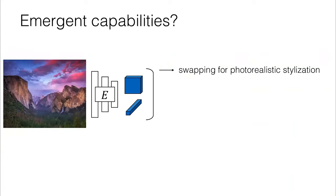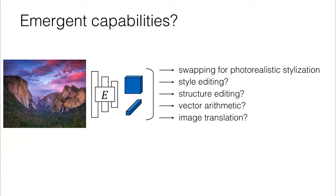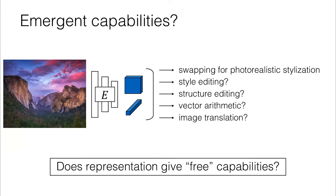This is great. At least we're able to do the single task of swapping or photorealistic stylization. But this was not our goal to begin with. This was just a pretext task. What we want to see is if we get anything out for free. Do we get emergent capabilities, such as editing the style of the image, messing with the structure, or doing vector arithmetic? Does this representation end up showing us these free capabilities?